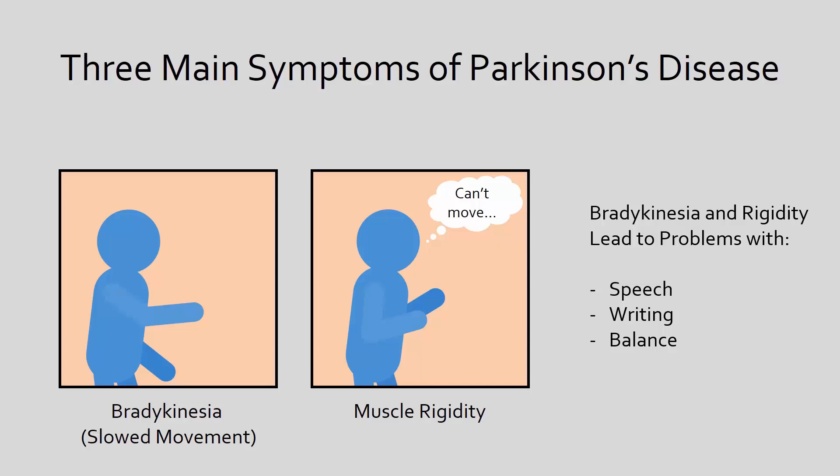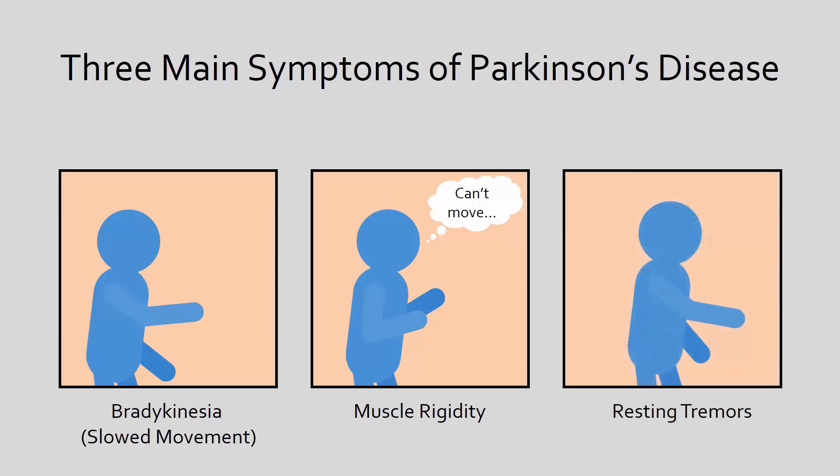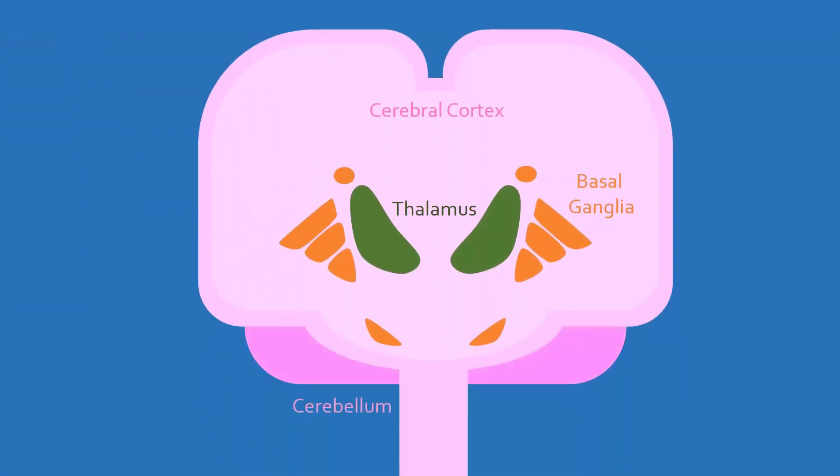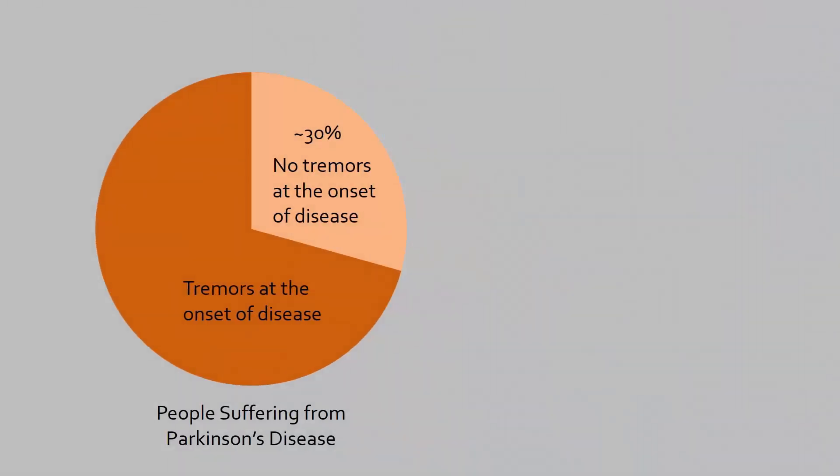The third and most well-known symptom, resting tremors, is not completely explained by the death of dopaminergic neurons. New research shows that other parts of the brain, such as the cerebellum, as well as other neurotransmitters such as serotonin, play a role in this symptom. Around 30% of people with Parkinson's do not develop this uncontrollable shaking at the start, but most eventually develop it as the disease progresses.